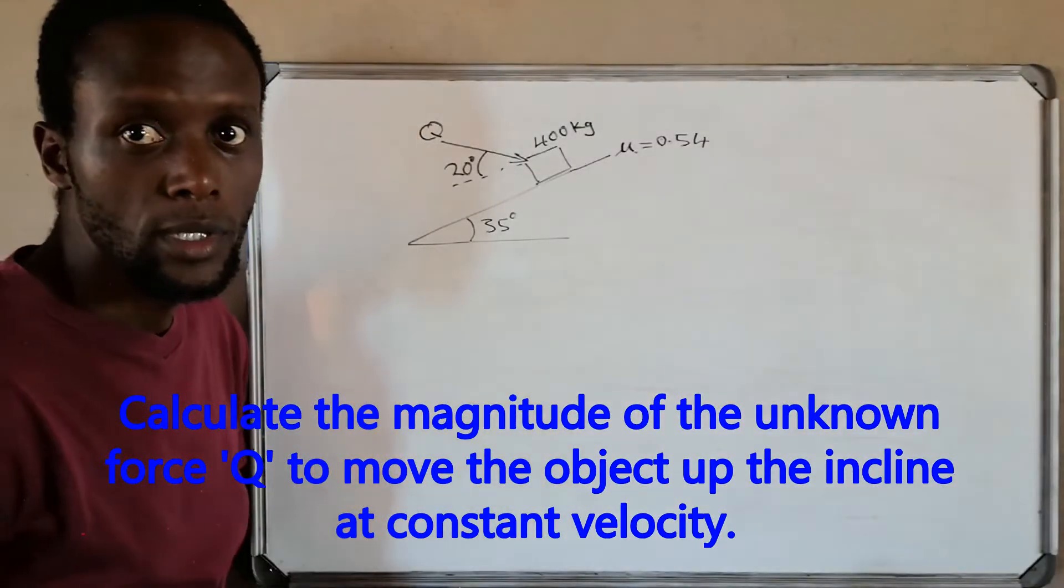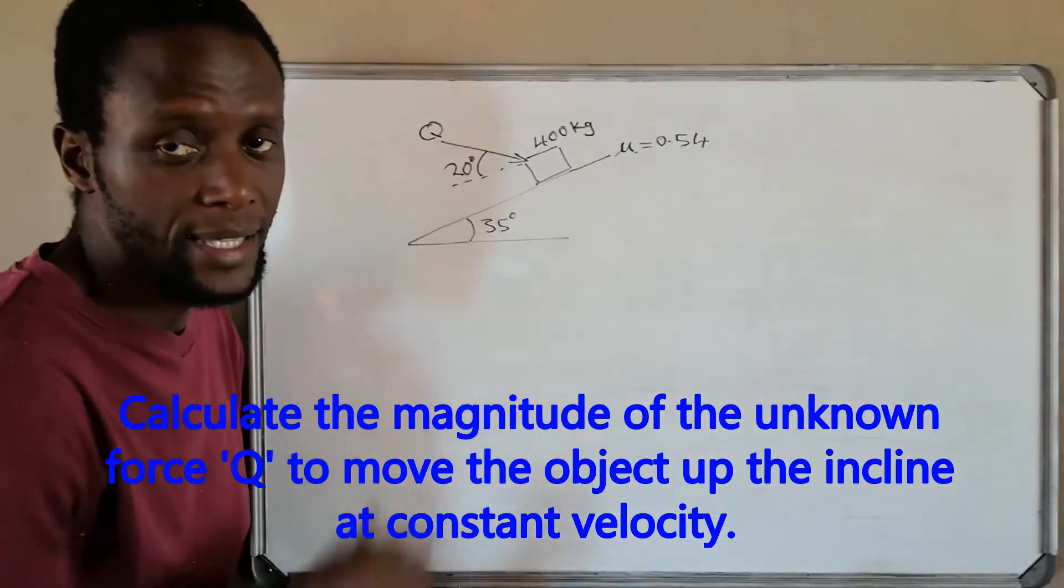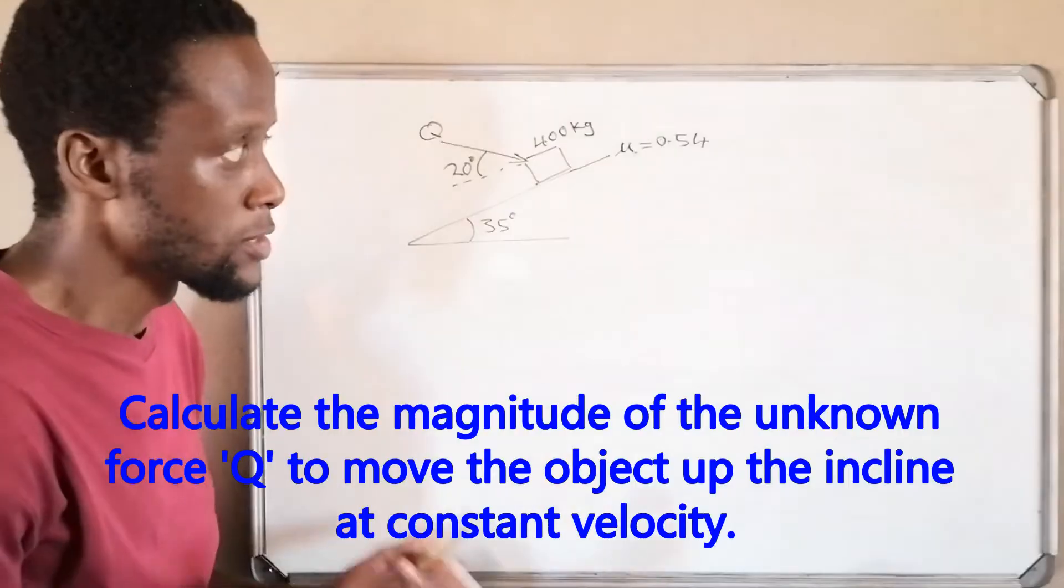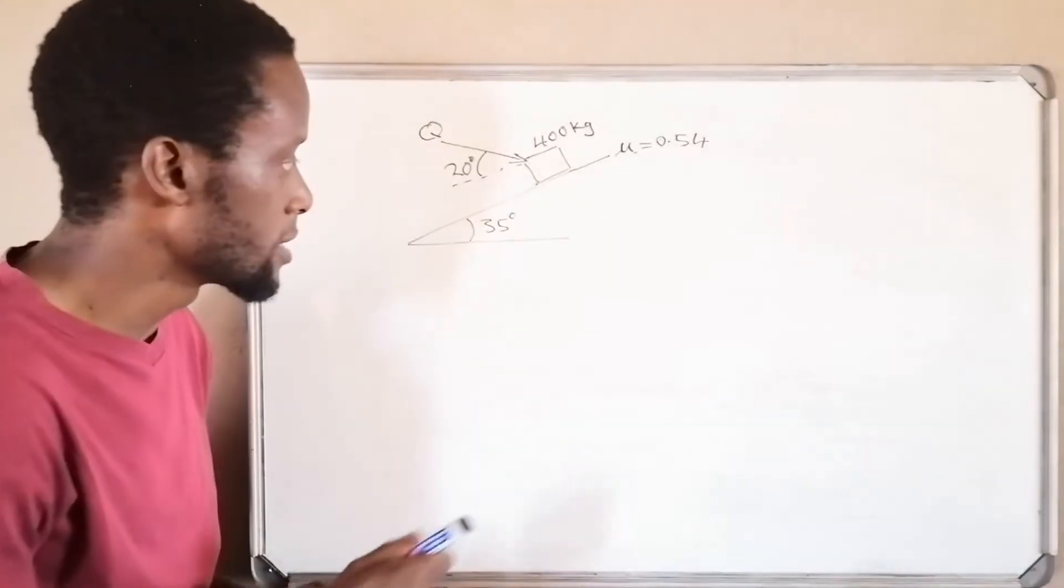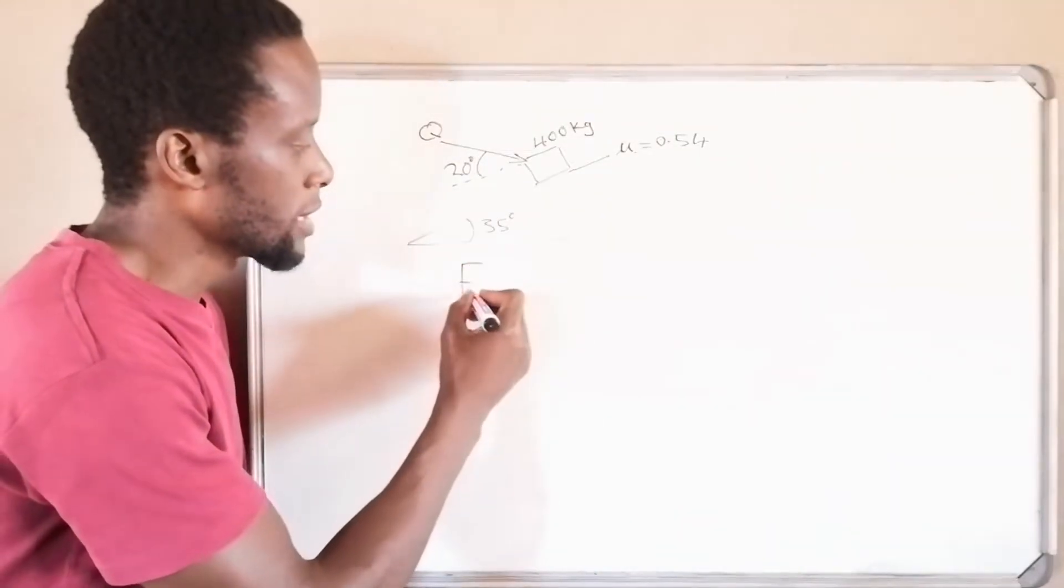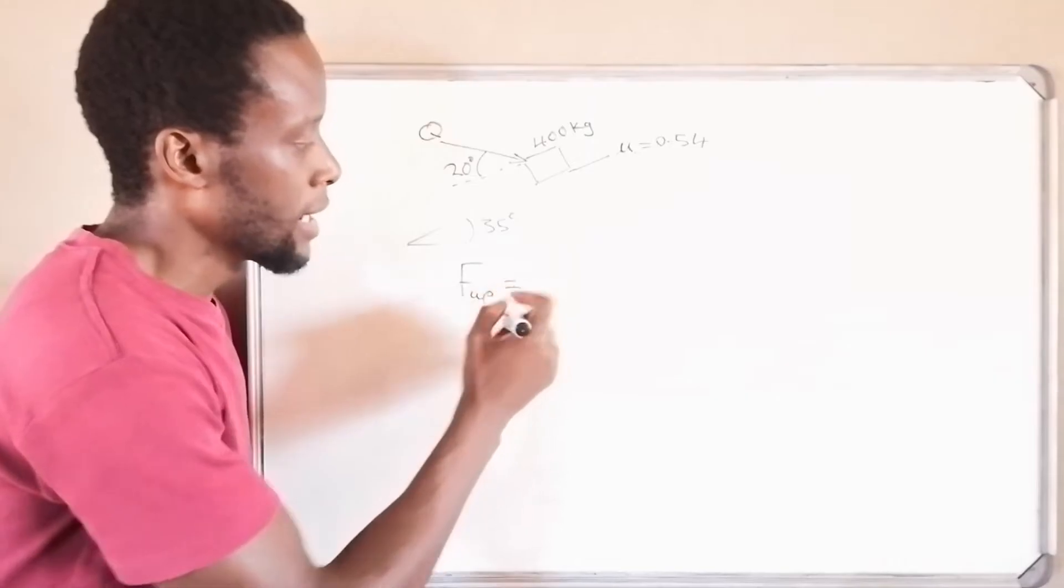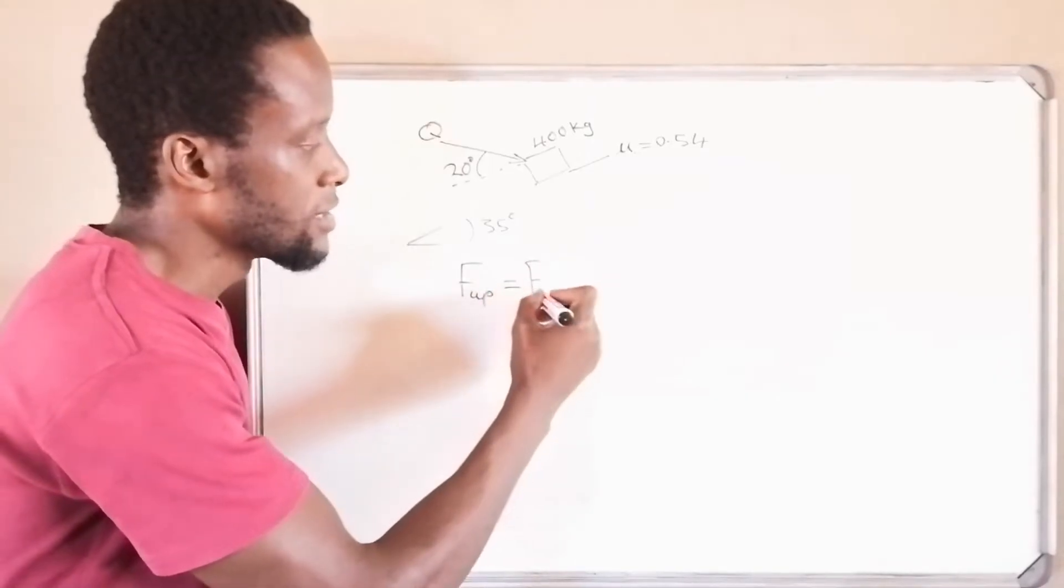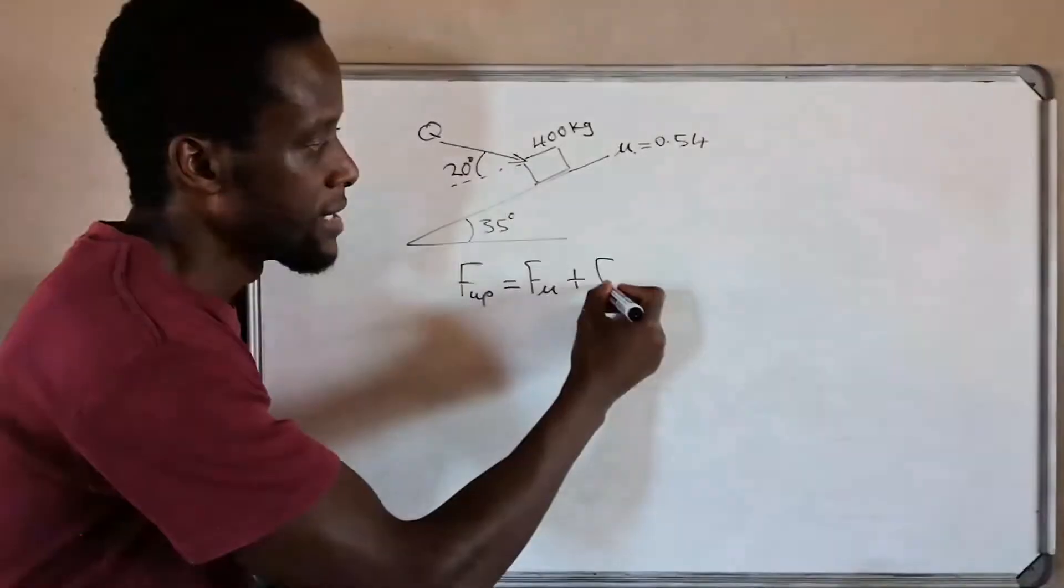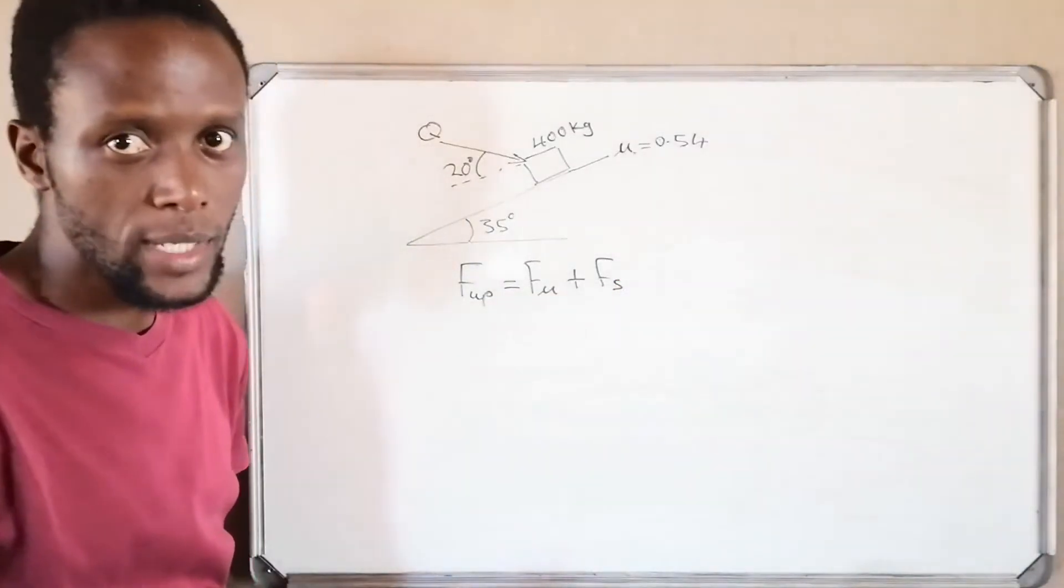And they ask how much force should be applied at Q in order to move the object up the incline at constant velocity. So the first thing that you have to ask yourself is where are we pushing this object? This object is going up and we know that going up it is the friction force plus the sliding force.